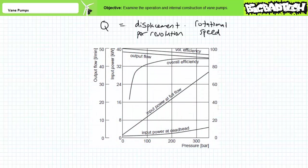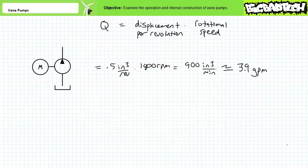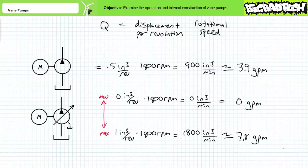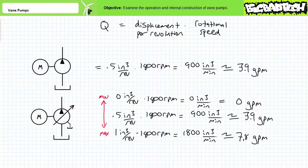A graph of volumetric efficiency, or flow rate at different pressure requirements provided by the pump manufacturer, would allow a technician to accurately predict these influences. For example, a fixed displacement vane pump with a displacement of exactly 0.5 cubic inches per revolution, driven at exactly 1800 RPM, could produce up to 1800 cubic inches per minute, or roughly 7.8 gallons per minute. A variable displacement vane pump with displacement adjustable from 0 to 1 cubic inch per revolution, driven at 1800 RPM, could produce anywhere from 0 to 7.8 gallons per minute. To match the fixed displacement example's flow rate, displacement would have to be adjusted to exactly 0.5 cubic inches per revolution.